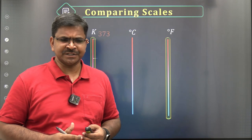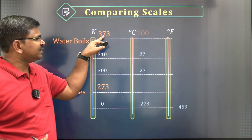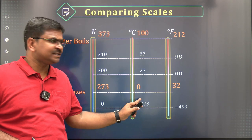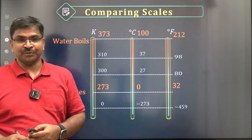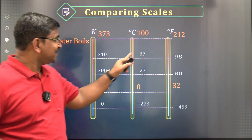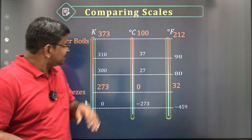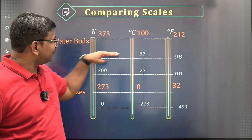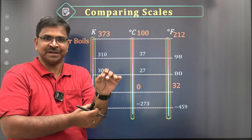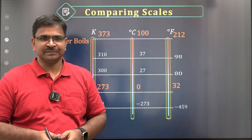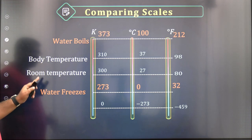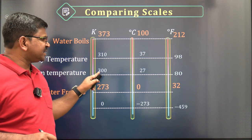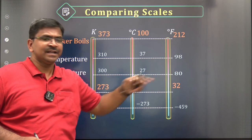For conversion, I need the calibration. The higher fixed point in Kelvin is 373, in Celsius is 100, and in Fahrenheit is 212. The lower fixed point in Kelvin is 273, in Celsius is 0, and in Fahrenheit is 32. These temperatures are also associated with our day-to-day life. Body temperature is 310 K, 37°C, or 98.8°F. Room temperature is 300 K, 27°C, or 80°F.